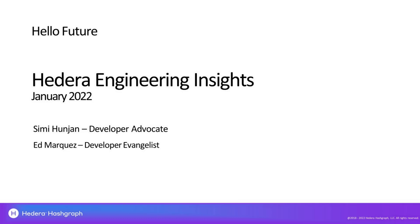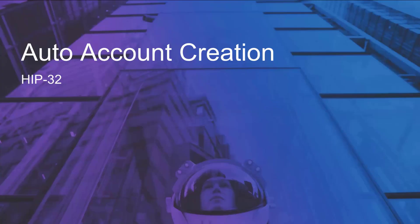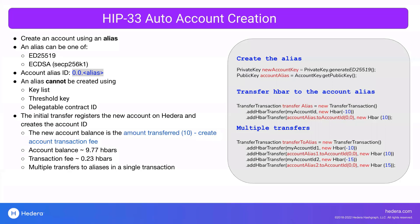A couple of the new features that came out in the v0.21 release were auto account creation and support for ECDSA keys. First, we'll get started with covering auto account creation. This feature came out of HIP32. The auto account creation feature is where you can create an account using an account alias. The alias can be either ed25519 or ECDSA. The alias account ID takes a 0.0.alias format — 0.0 is standard for entities, but in this case you have the public key inserted in that alias bracket.